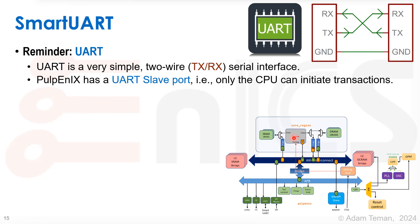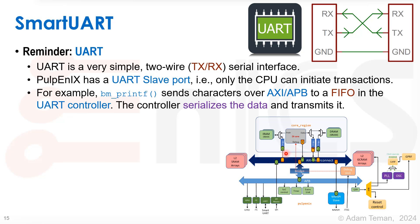Being a slave means the CPU, or another master, initiates transactions — it can write and read from the UART, but not the other way. For example, when we call bmprintf — our bare metal printf command — we send commands from the core to the AXI, through the bridge to the APB, to the UART. The characters are stored on a FIFO buffer, and then the UART controller pushes them out to our PC or whatever is connected.